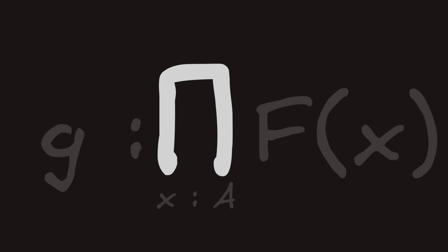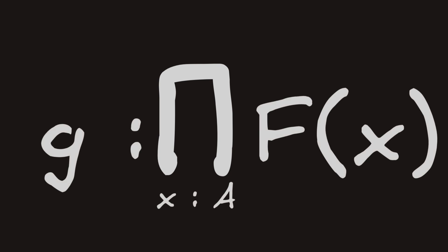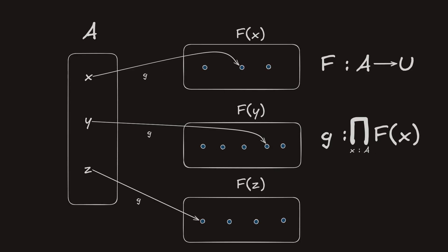Using the pi type, we can construct a new kind of function type — one that redefines our very definition of a function. For example, we can construct a function g that takes every term in its input, x, to a term in F(x). In other words, the output type depends on the input term. And thus we have a new breed of functions that transcend the realms of ordinary functions. We call them dependent functions.